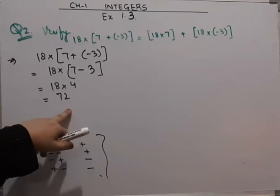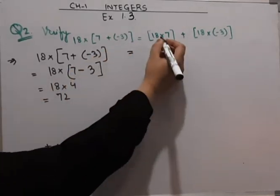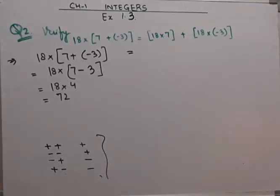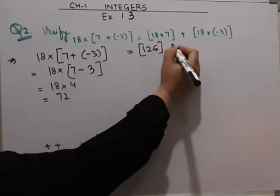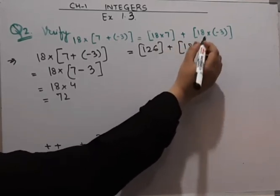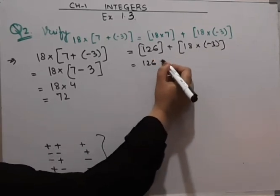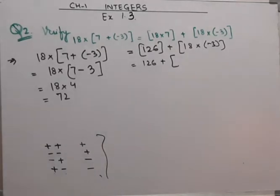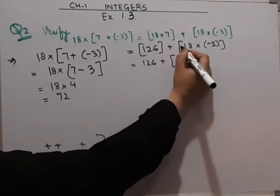Left hand side is 72. Coming to the right hand side, 18 into 7 is 126, plus 18 into 3 is 54.